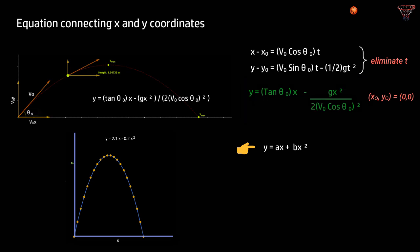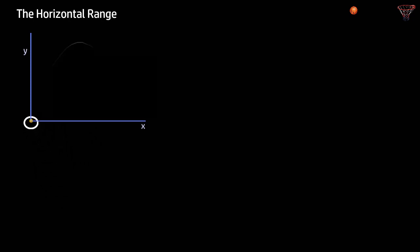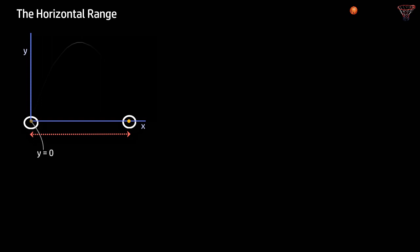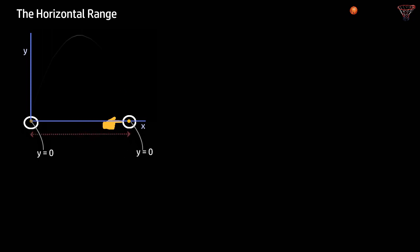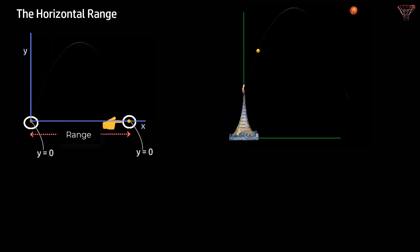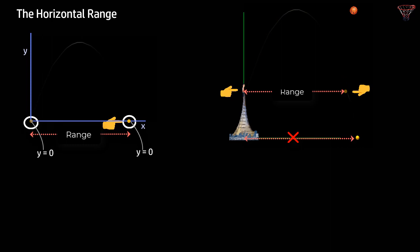Another important measure is the horizontal range. The horizontal range is the horizontal distance covered by a projectile between the point from where it is projected and the point where it returns to the same initial height. So if it starts at y = 0, the range is measured to where y = 0 again. For example, if you stand on a building and throw a ball up, the range is measured to where the ball regains its initial launch height, not where it hits the ground below.